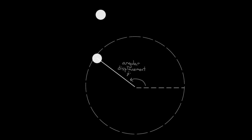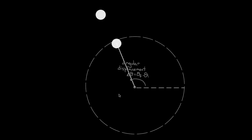That would be what's called the angular displacement. It's given the symbol delta theta, because theta is the angle, and delta theta is the change in the angle, so this is really theta final minus theta initial. For instance, if we started the tennis ball over here at zero and we ended at 180, theta final would be 180, theta initial would be zero, so our angular displacement would be 180 degrees or pi radians.